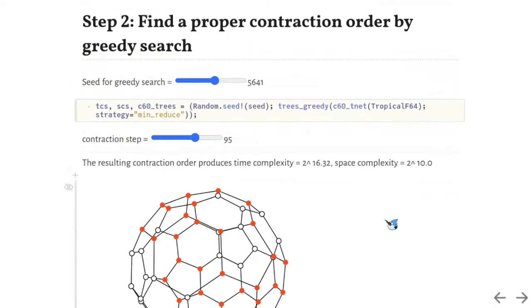The second step is finding a proper contraction order. So far, we have only shown the equivalence of this tensor network and the original spin glass problem, but haven't shown how the tensor network representation can help reducing the complexity of the problem. As we have mentioned,